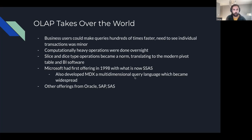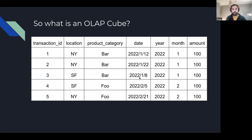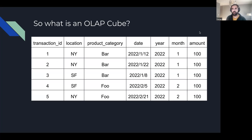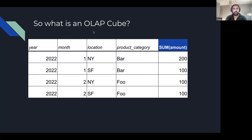So given all that historical context, what is an OLAP cube really? It's just a table — there's a lot of confusion about what multi-dimensionality means. It's really just an aggregated table. In a simple example, you've got transactions with a few dimensions: location, product category, time, and an amount. What you can do is essentially pivot that — take the raw data and create an aggregate view. That's all the OLAP cube does.